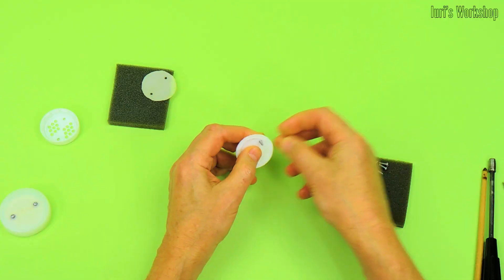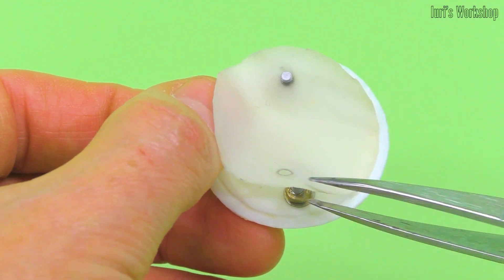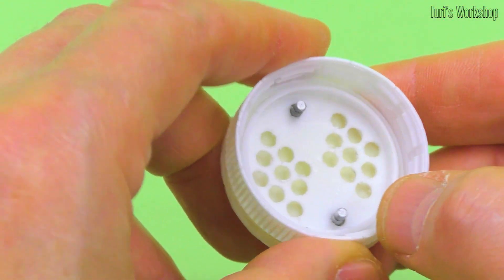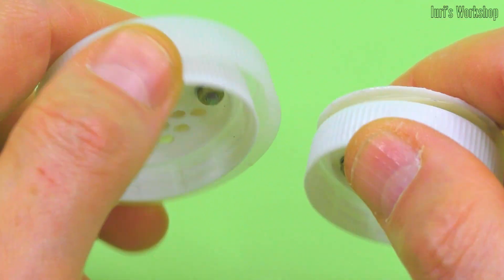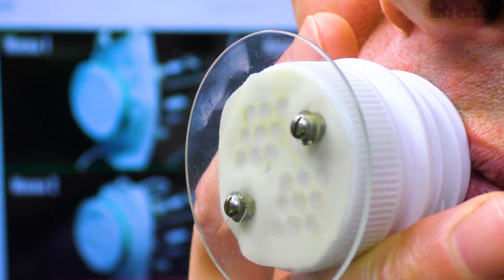And this is the intake valve assembly. The inhaled air passes through it. As you can see, the valves differ only in the presence of a splash-proof cover. This is how these valves work.